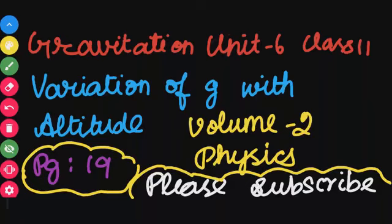Welcome to Study with Scarlet YouTube channel. This is the Gravitation Chapter, in Unit 6, Class 11, Volume 2 Physics. Today's topic is the variation of g — acceleration due to gravity with altitude.